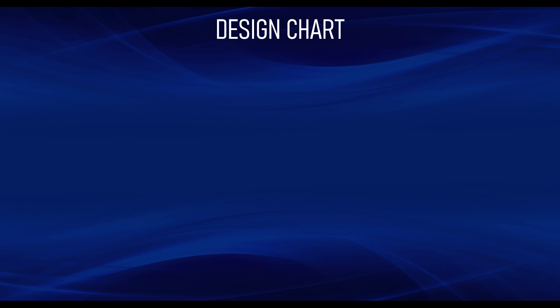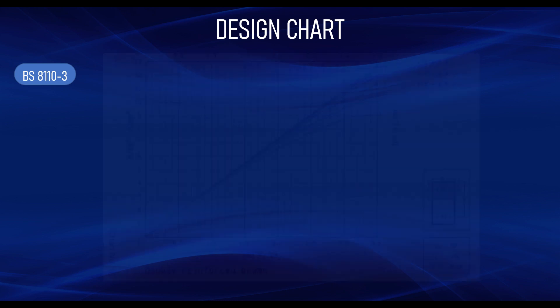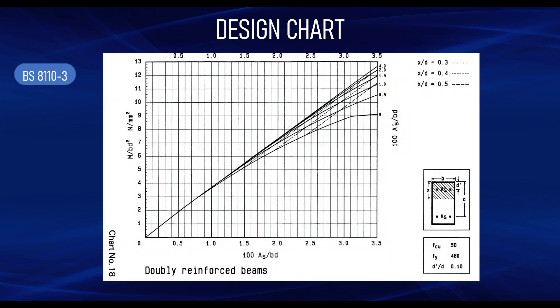The design chart for doubly reinforced sections can also be found in BS 8110 Part 3. If you check the description of this video, I've left the link to download the design code. The design code contains charts that have been generated to design singly reinforced, doubly reinforced, and column sections. You can also check my video on design of RC columns using the design chart, and also design of singly reinforced sections using the design chart.